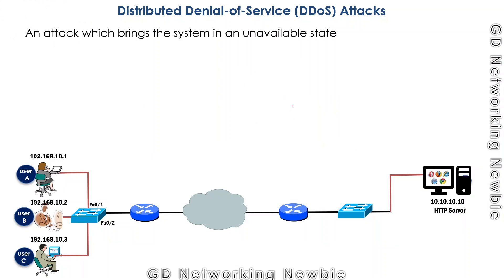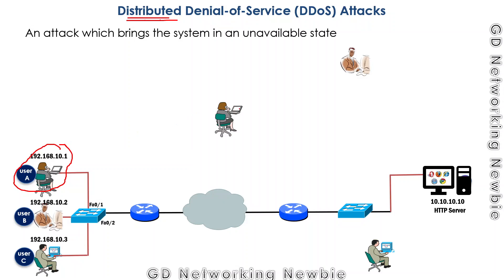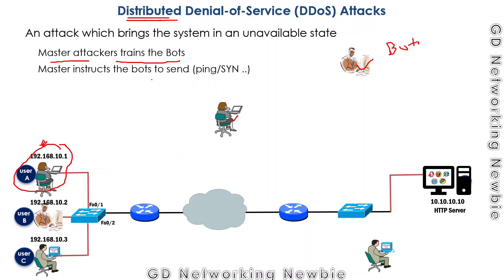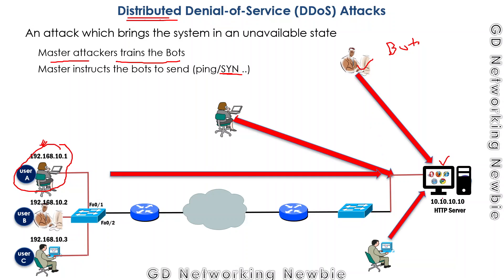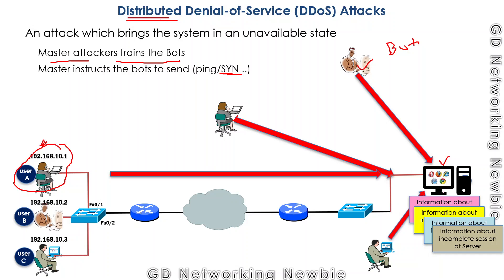A simple variation of that is the distributed denial of service attack, which uses the same idea, but now the attacker is not on a single computer. The bad guy finds other compromised machines, forms a team, and acts as a master. The other machines are called bots. The master trains those bots and then instructs them to send SYN messages to the server, so they all send SYN messages simultaneously.